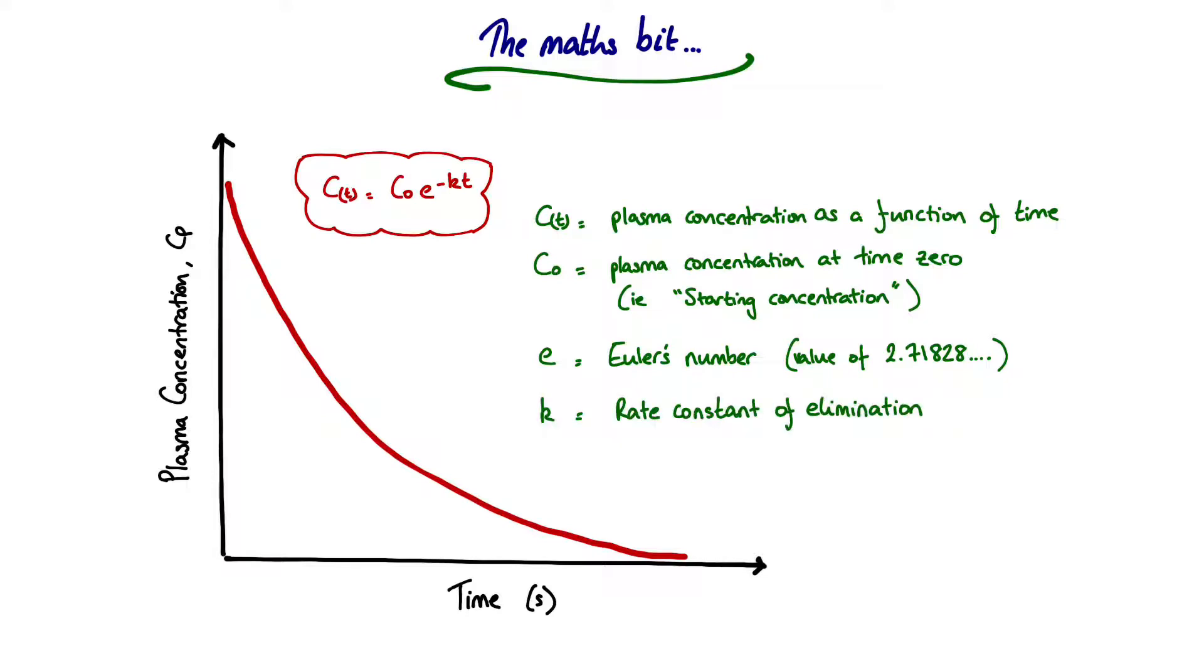K is the rate constant of elimination and is a quantification of how efficient the process is. Very high values of K will give you very steep curves. If K theoretically was 0, this would cancel to 1 and your plasma concentration would remain at a constant C₀. If your rate constant of elimination is 0, there is no reaction happening. And T is time.